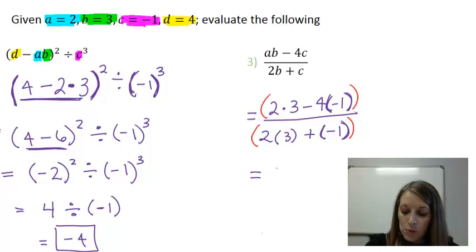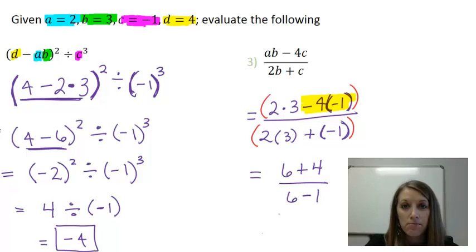And so inside those parentheses, we want to do multiplication. So on the top, 2 times 3 gives me 6. And here I'm going to think about it as a negative 4 times a negative 1. And that would give me a positive 4. On the bottom, 2 times 3 is 6, plus a negative 1, or I can rewrite that as minus 1.